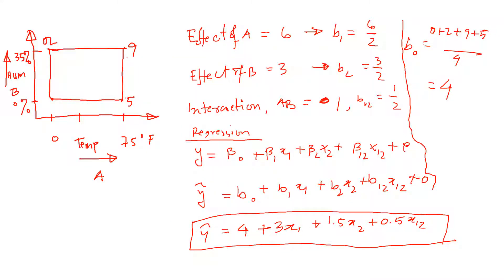In this temperature and humidity experiment, we have seen that before we calculated the effect of A as 6 for comfort level.